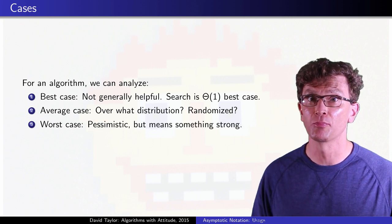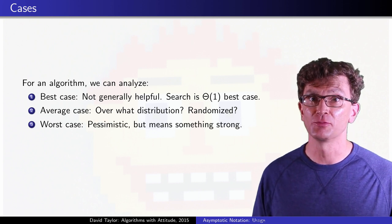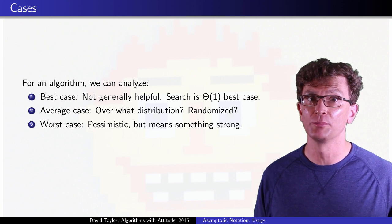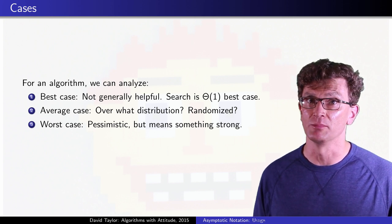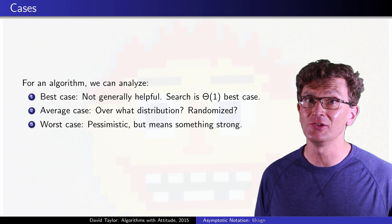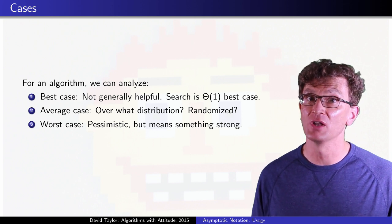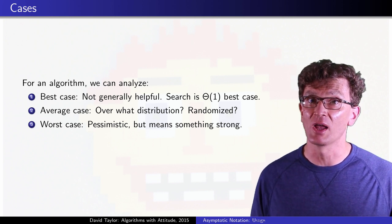Worst case analysis is probably the most common. It is pessimistic, but if you can prove good bounds, it makes a strong statement. Sometimes it is also a lot easier than average case analysis, and for lots of algorithms, it might be the same ordered growth.